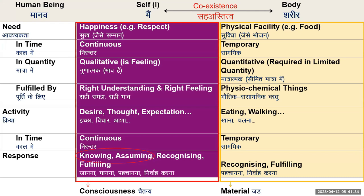We had also given an assignment yesterday. The first part was to reflect on the needs, activities, and response of the self and see how these are different from the needs, activities, and response of the body. The second part was: in our interactions with others — whether at home, at work, or wherever — try to see what is your assumption about the relationship with that other human being, and see how your recognition and fulfillment is influenced by your assumption. Were you able to do this exercise?